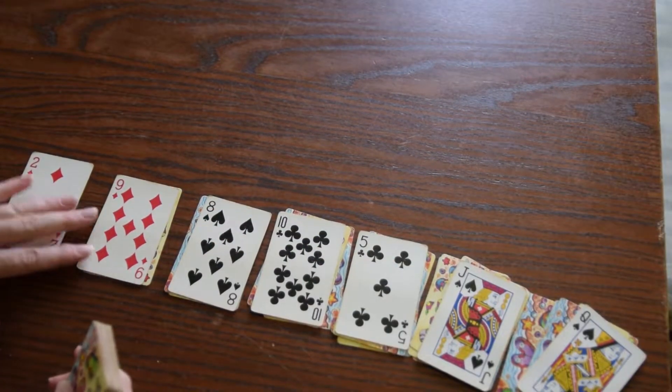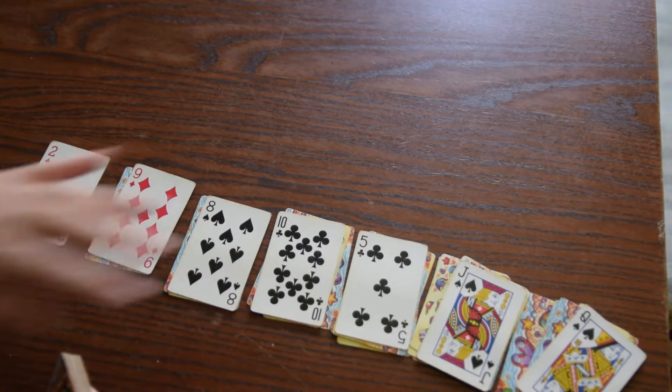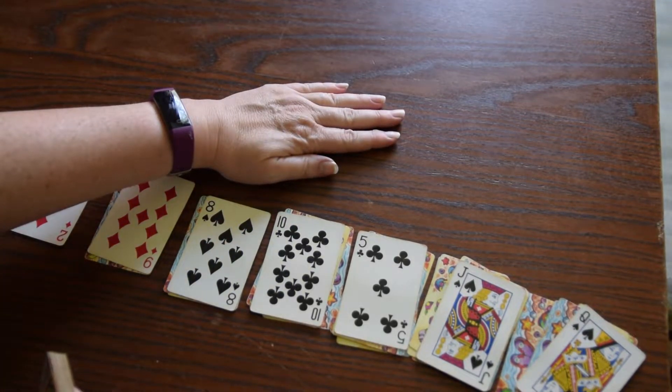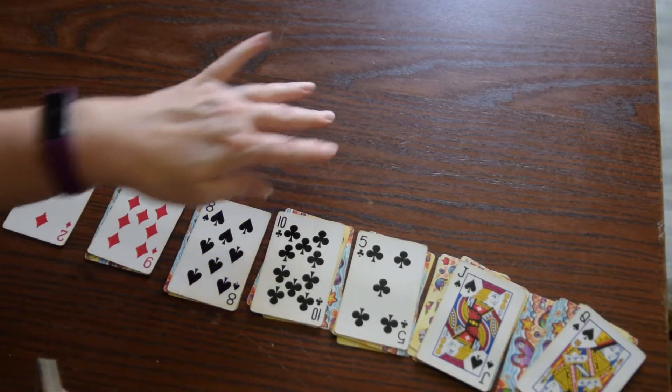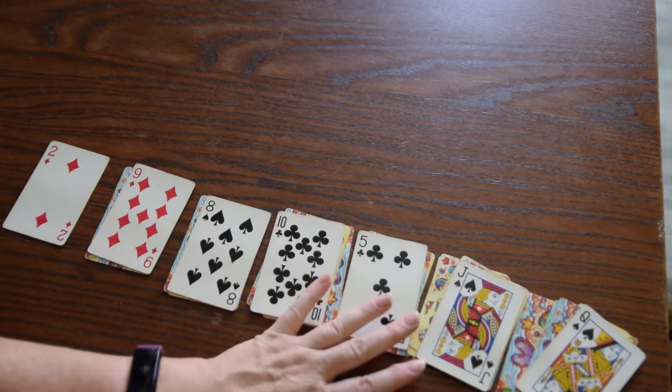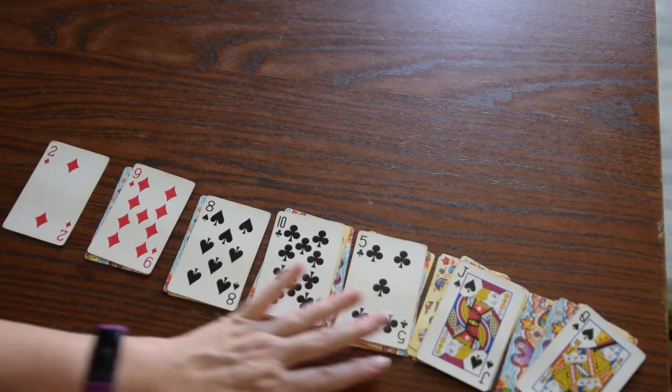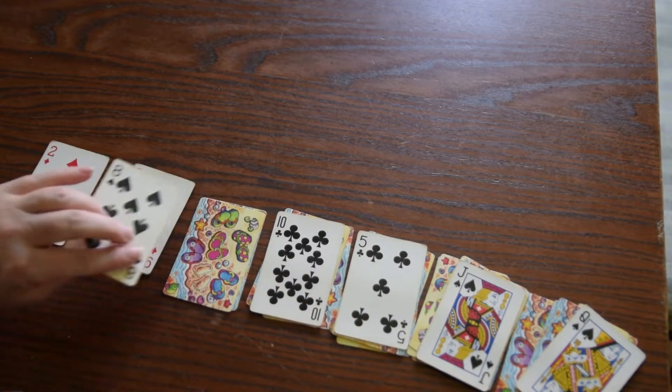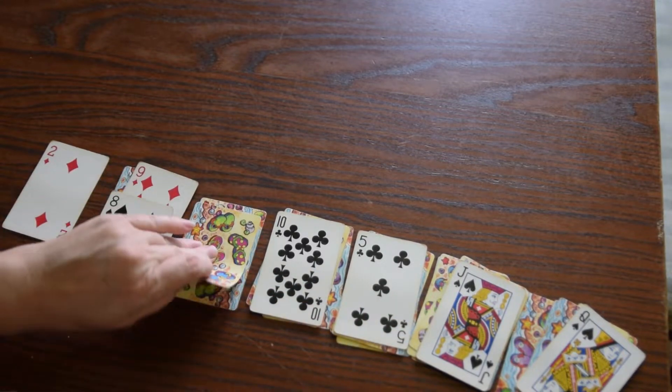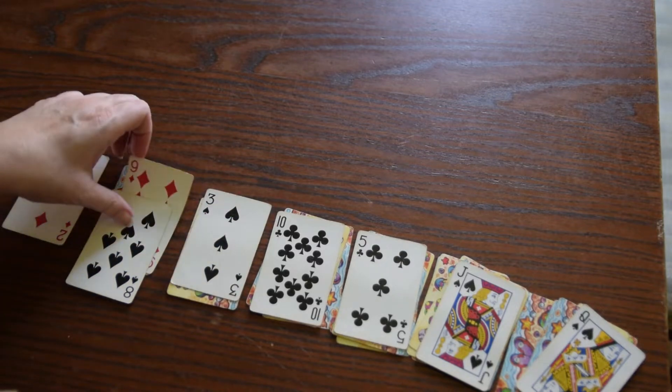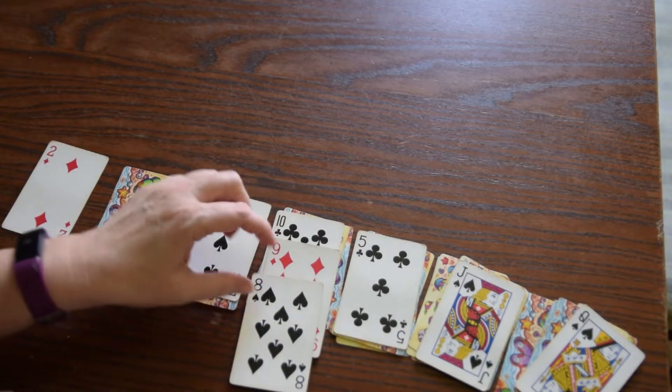Then you're going to see what moves you have. Any aces can go up to the top. Anything down here that's a lower number and the opposite color can go on top of something. So this black eight can go on a red nine and I flip that over. The red nine can go on a black ten.